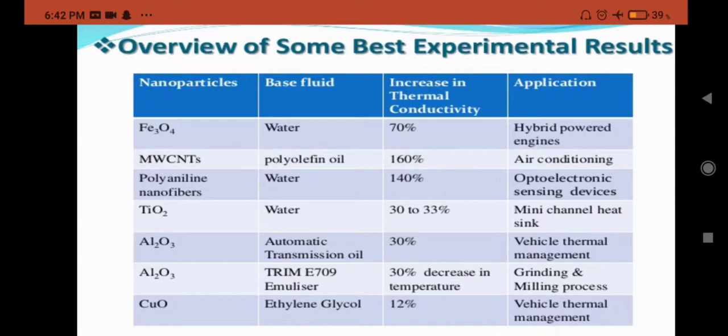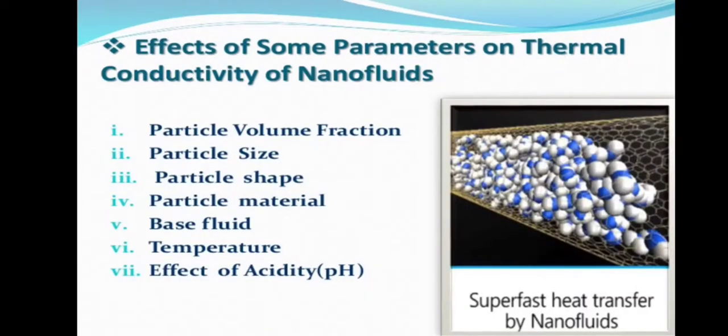Again, aluminum oxide if used with TRIM E709 emulsifier as a compound, then again we get a decrease in its temperature. Now the lowest is CuO, which is a compound of copper. If copper oxide is used with ethylene glycol, it gives us the lowest, which is 12 percent increase in thermal conductivity, and obviously its application could be used in vehicle thermal management.